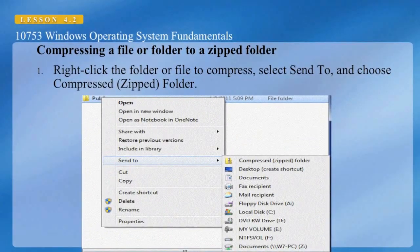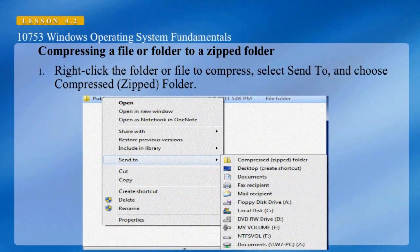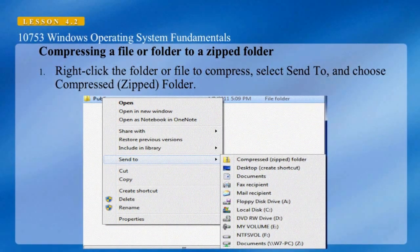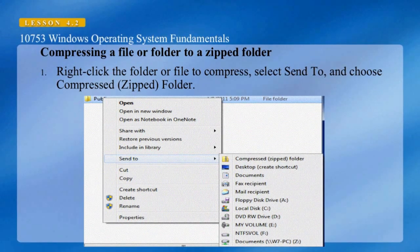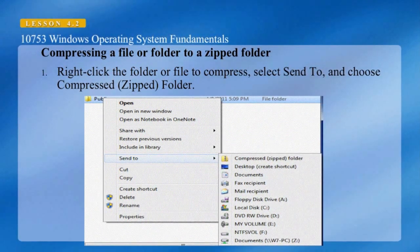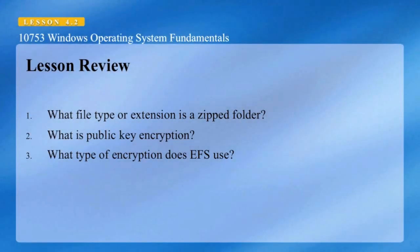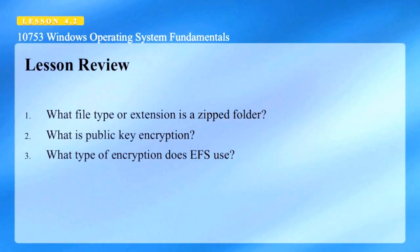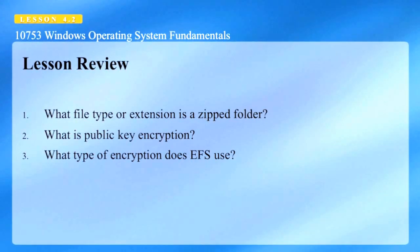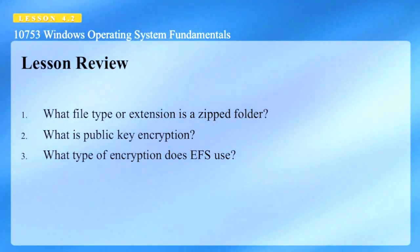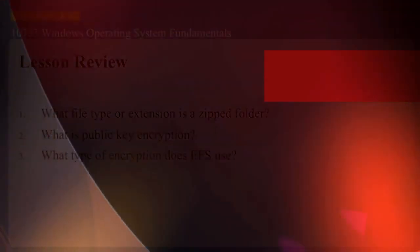If you want to compress a file or folder to a zipped folder, simply right-click on it, select Send To, and then choose Compressed or Zipped Folder. Here are some discussion questions: What file type or extension is a zipped folder? What is public key encryption? And what type of encryption does EFS use?